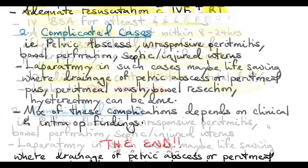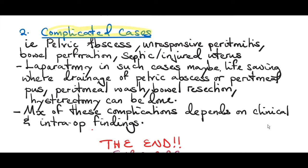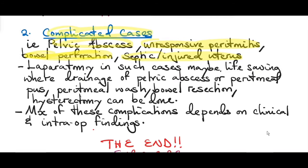Management of a complicated septic miscarriage: complicated cases include pelvic abscess, peritonitis unresponsive to antibiotics, bowel perforation from the MVA or due to friable intestines from peritonitis, and a septic or injured uterus. In these cases, involve a senior clinician and general surgeons. A laparotomy may be life-saving, where drainage of a pelvic abscess or peritoneal pus, peritoneal wash, bowel resection, or hysterectomy may be performed. Management depends on clinical and intra-operative findings.